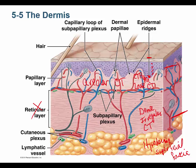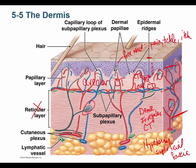All blood vessels exist in the dermis — none go up into the epidermis. Most nerve endings are also in the dermis; however, some nerve endings do extend up into the epidermis, like free nerve endings, which are involved in pain, tickle, and itch. Nerve endings like Meissner's corpuscles and Merkel's discs stay down in the dermis.